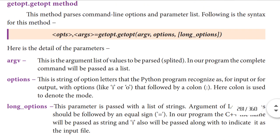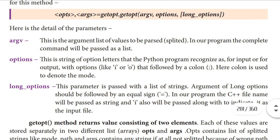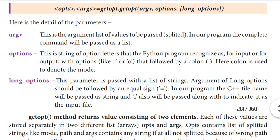So these three parameters we have in this getopt function. In opts, the parameter list and options — which options we are using, that is the mode — are stored in the opts list. In args, the values that are not split are stored there. The values that we have split from the list are stored in args.